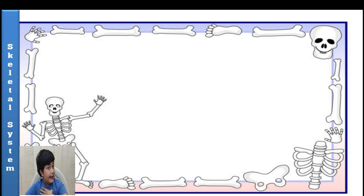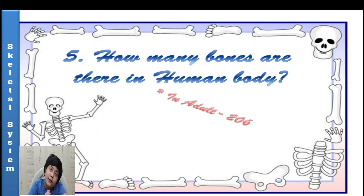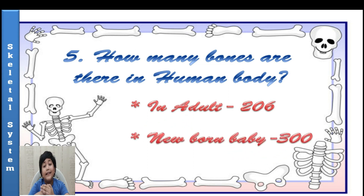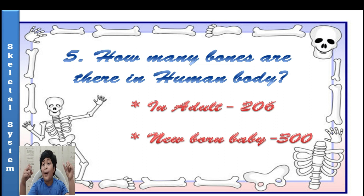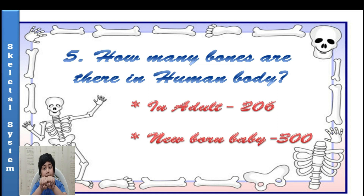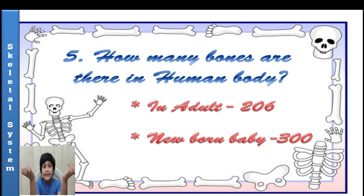Our skeletal system is made up of bones. So how many bones are there in a human body? There are 300 bones in a newborn baby and 206 in an adult. It is not like after we grow up our bones disappear — small bones fuse together and become a large bone in our skeletal system.